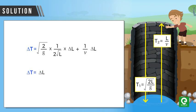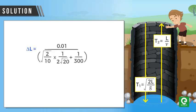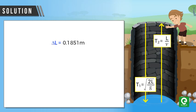Taking ΔL common, our expression becomes ΔT equal to ΔL into square root 2 by g into 1 by 2 root L plus 1 by V, or ΔL comes out to be 0.1851.